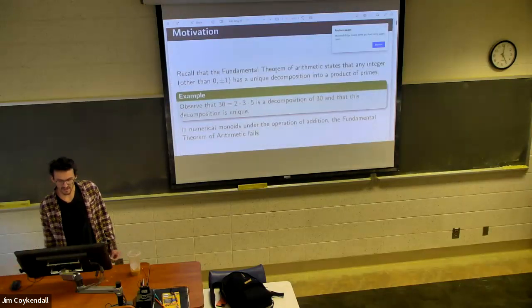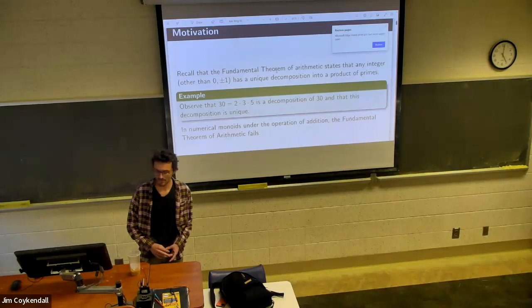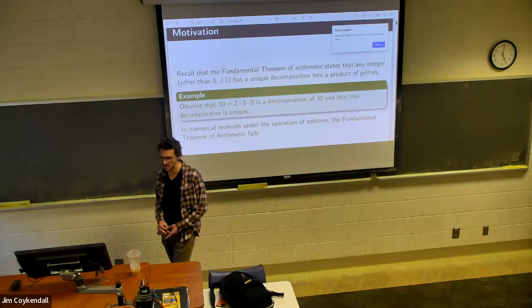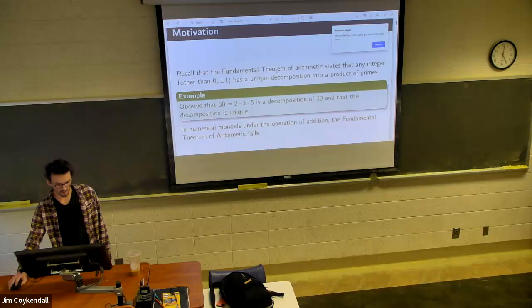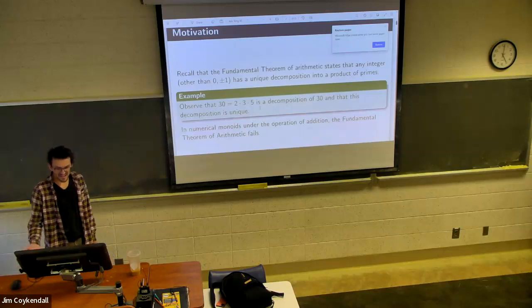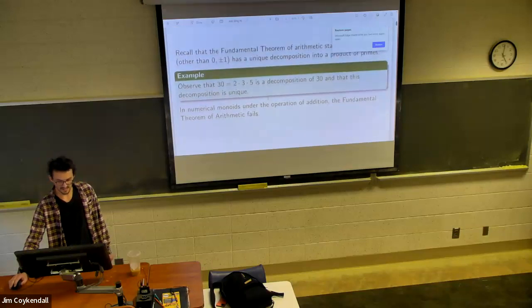All right, so the fundamental theorem of arithmetic states that any integer other than zero and plus or minus one has a unique decomposition into a product of primes. An example that will wow you all is 30, and you just have to believe me when I say that this is it, and it's unique. So in numerical monoids with addition as the operation, the fundamental theorem of arithmetic fails, and so we kind of investigate that.